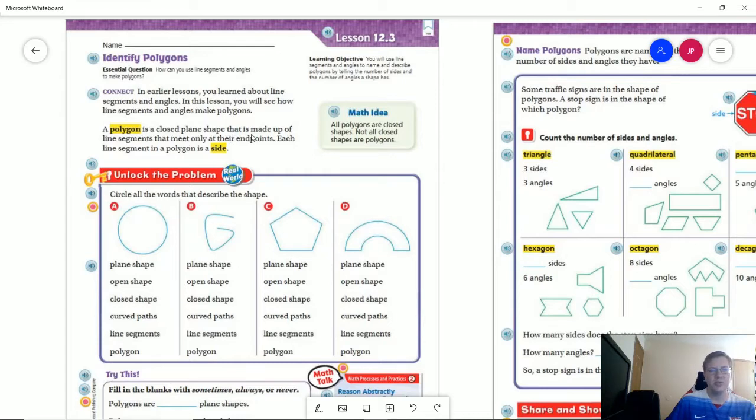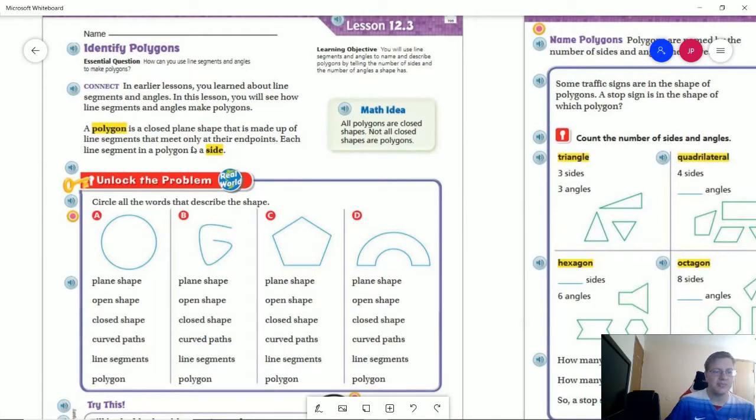So one of the important things to remember is just because it's a closed shape doesn't mean that it is a polygon. It also has to be made of line segments and only line segments.